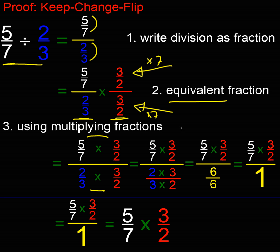Now let's look at the top. 5 sevenths times 3 over 2 is where we want to get to, isn't it? Because that's keep, change, flip. That's what we're expecting to prove. So we've got to work out what's happening down here in the denominator.